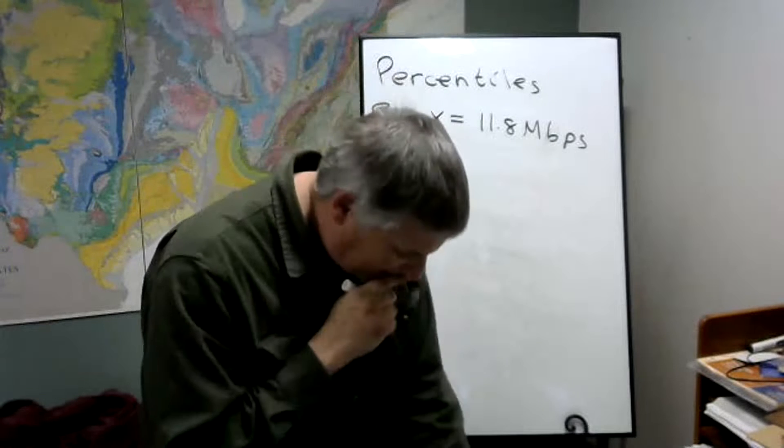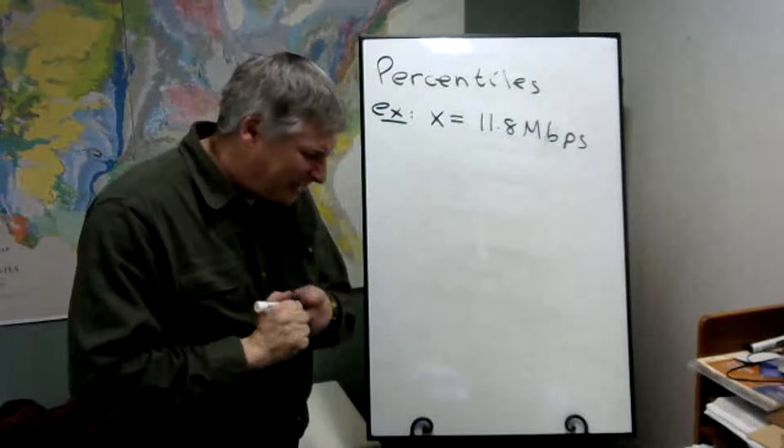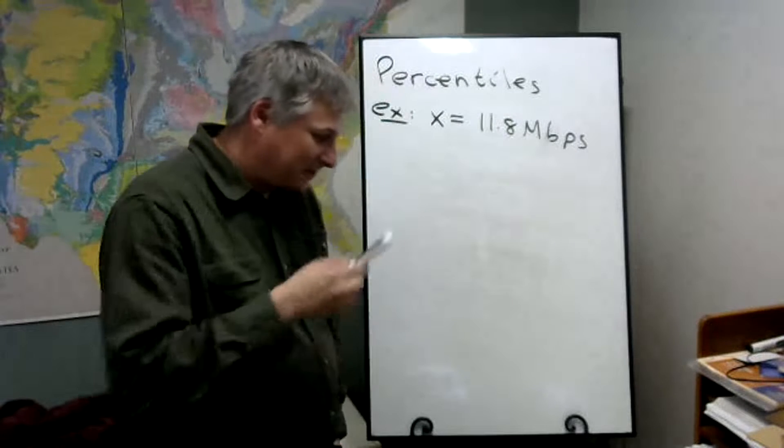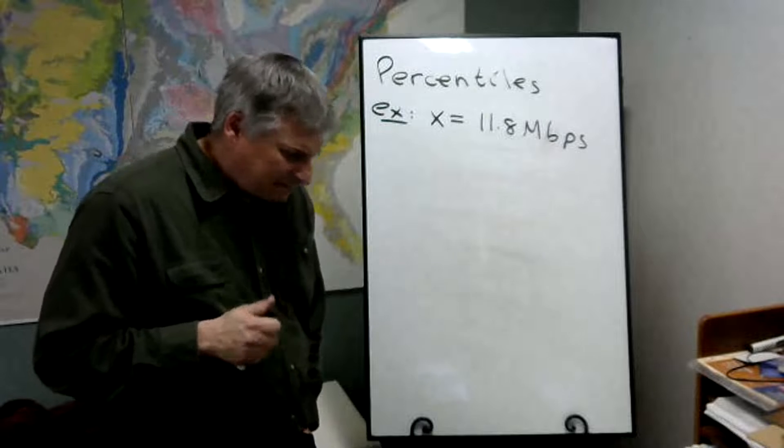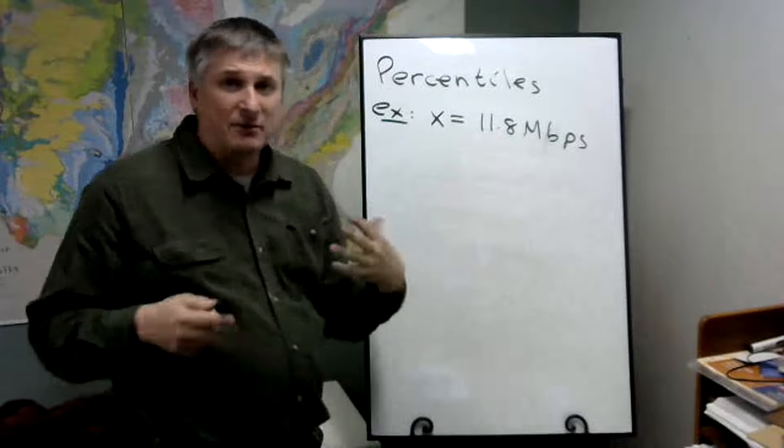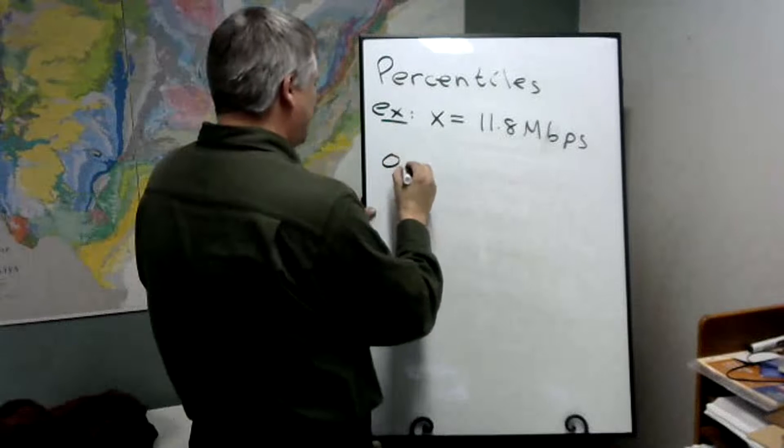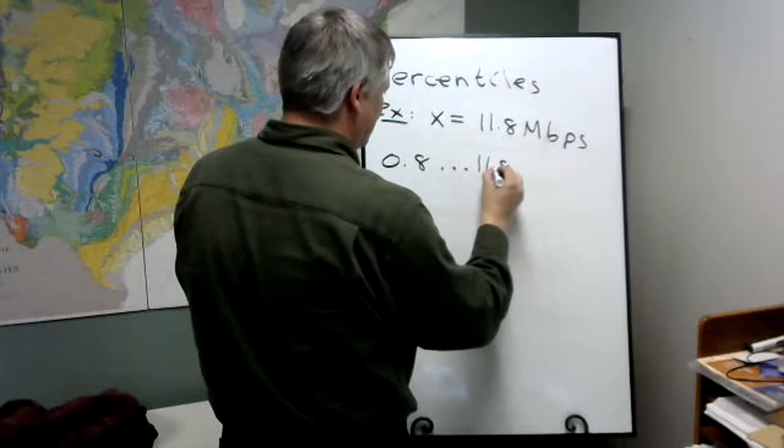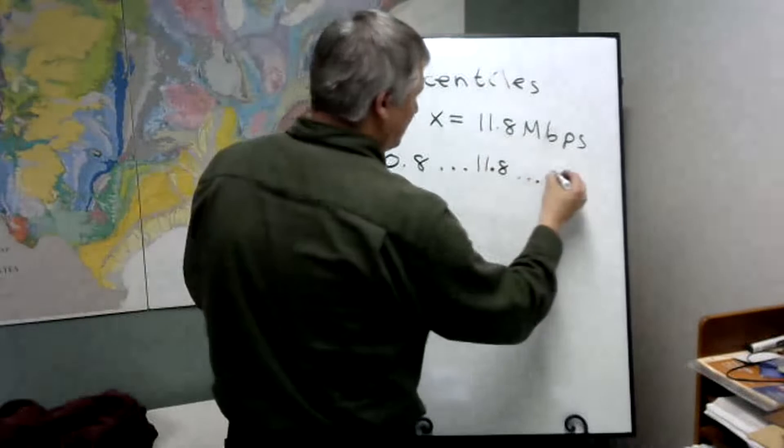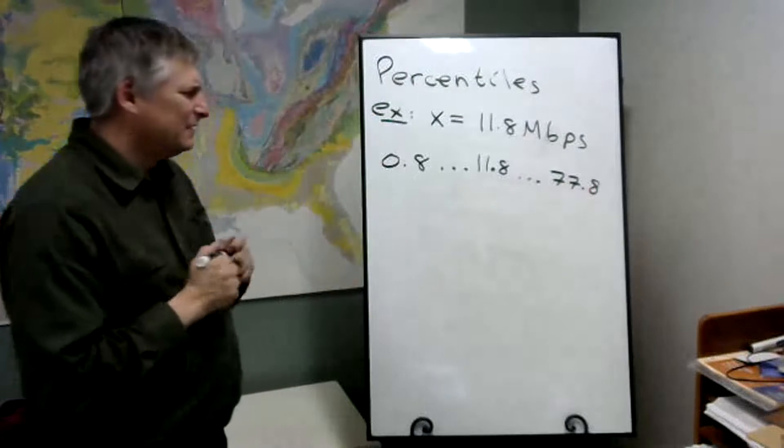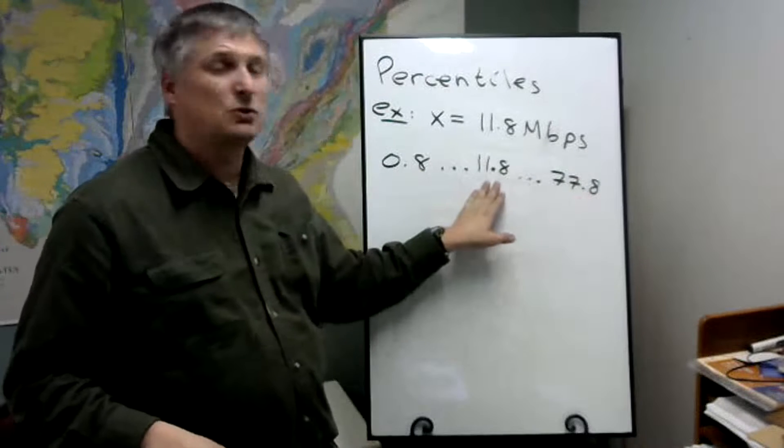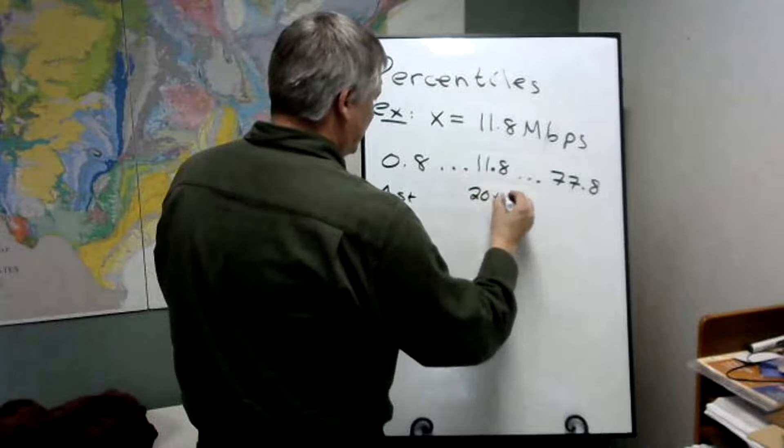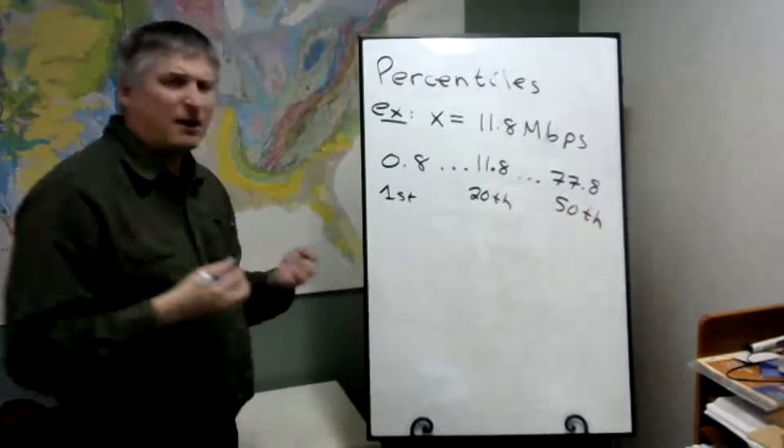So we're going to consider this one, 11.8, and I think it's megabits per second. And what we want to do is ask about this particular value in the data set. The data set, the lowest value is 0.8 and then we have a whole bunch of other values. Eventually we get to 11.8, and there's some other values, and then we get the highest value 77.8. This was the first data value. This one in the chart is the 20th and this is the 50th.